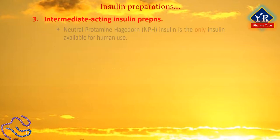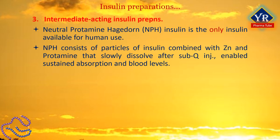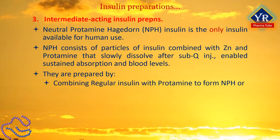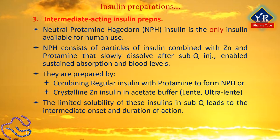Neutral protamine Hagedorn (NPH) insulin is the only intermediate-acting insulin still available for human use, though a veterinary formulation of pork insulin zinc suspension recently became available to treat diabetic dogs. NPH insulin consists of particles of insulin combined with zinc and protamine that slowly dissolve after subcutaneous injection, enabling sustained absorption and blood levels. They are prepared by combining regular insulin with a stoichiometric amount of the positively charged polypeptide protamine to form NPH insulin, or by preparing crystalline zinc insulin in an acetate buffer, i.e., lente and ultralente preparations. In both cases, the limited solubility of these insulins in subcutaneous fluids leads to the intermediate onset and duration of action.